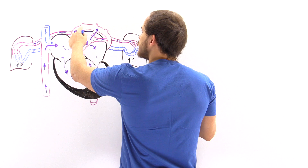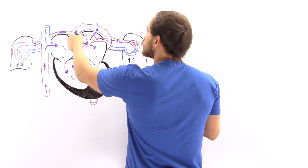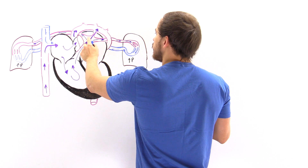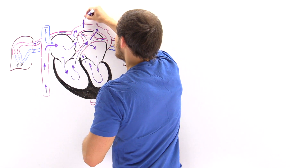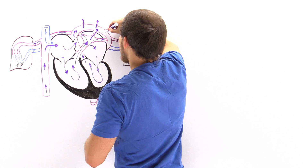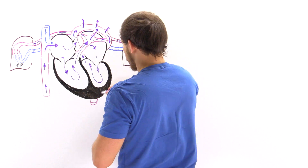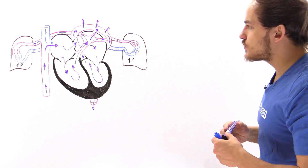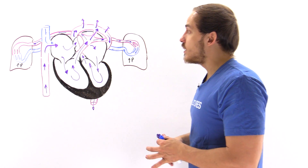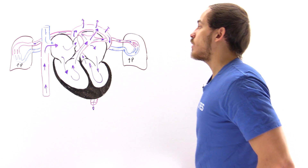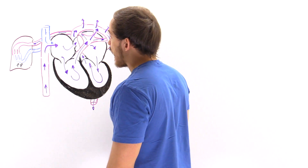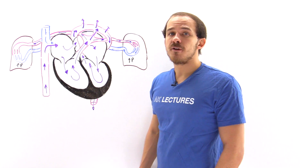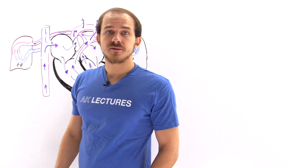Now we have the mixing of this partially oxygenated blood with the blood coming in from the pulmonary trunk, and then the blood moves into the upper extremities as well as down into the lower extremities. This is the way that blood actually travels within the developing fetus, and we can see it is quite different than the way that blood moves inside the fully functional adult heart.